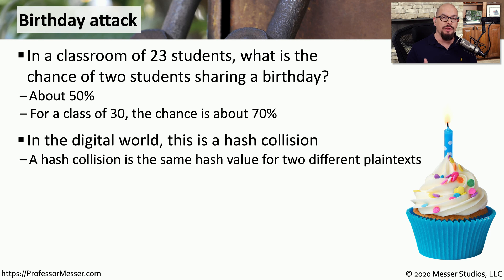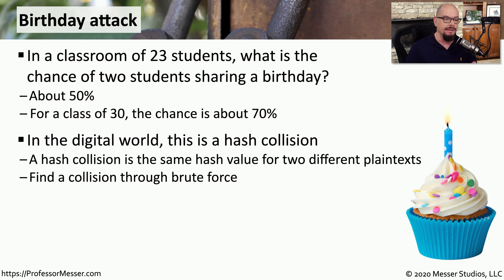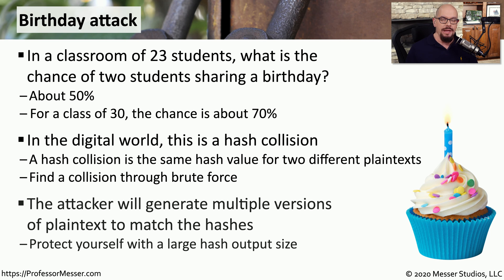In the digital world, we call this a hash collision. A hash collision is when you have two very different types of plain text, but both create exactly the same hash — something that should never happen. If we're able to find a hash collision, we may be able to take advantage of this inconsistency in the hash algorithm. The attacker spends their time finding that other plain text that matches that hash. One way to prevent this is to increase the size of the hash, which decreases the potential for a collision.